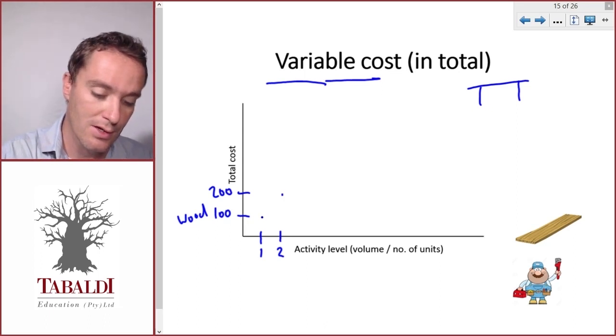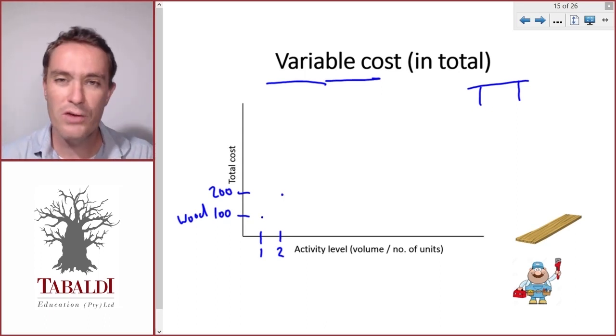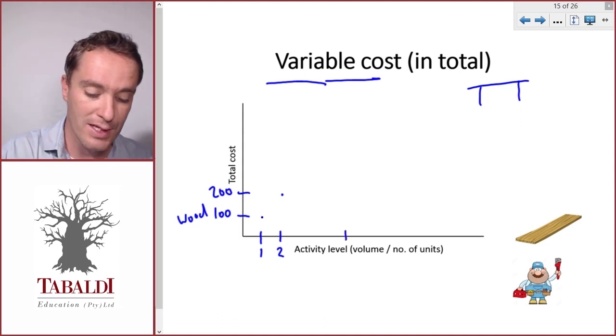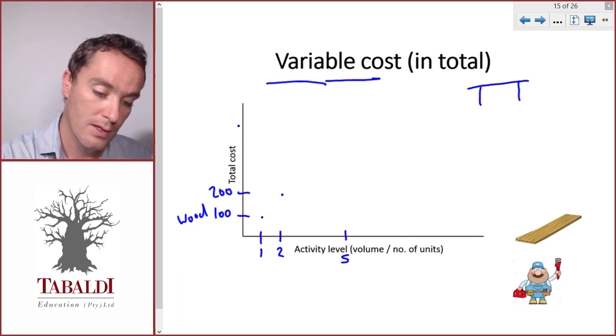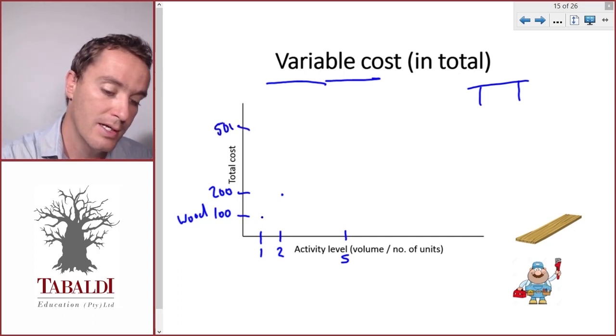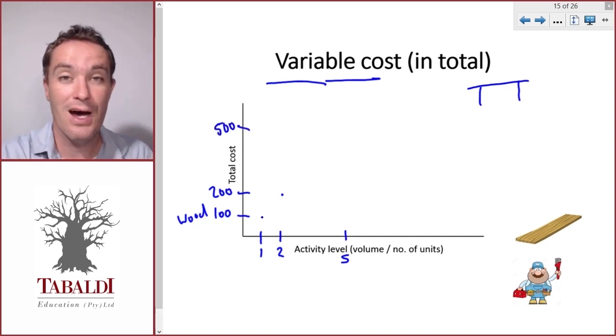So let's plot this on the graph. Now what if we increase production to five tables? How much would our total wood cost then be?